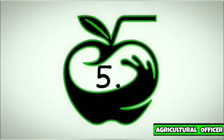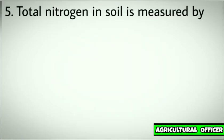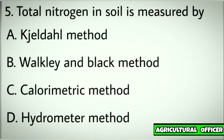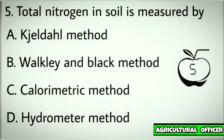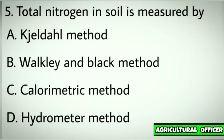Question number five. Total nitrogen in soil is measured by. Options: A. Jaldal method. B. Walkley and Black method. C. Calorimetric method. D. Hydrometer method. Correct answer: A. Jaldal method.